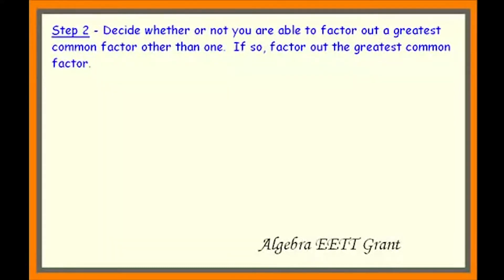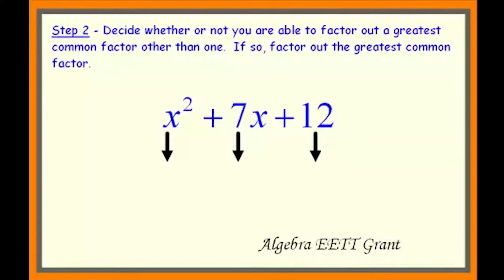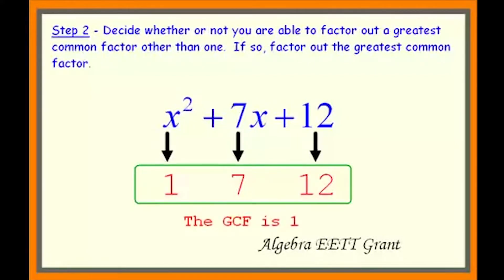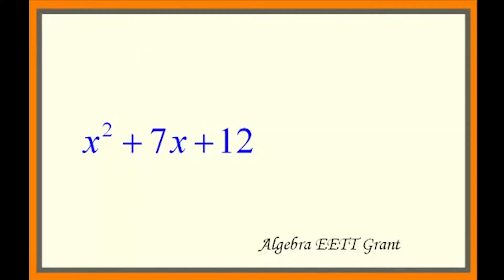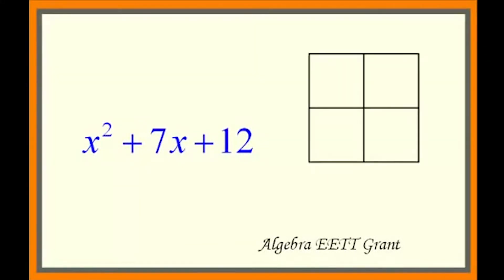Step 2 is to decide whether or not you're able to factor out a greatest common factor. Some trinomials have something in common in all three terms — if that happens, you've got to factor it out first before using the Punnett square. The coefficient of x squared is 1, 7x has a coefficient of 7, and 12 is our constant. The greatest common factor of 1, 7, and 12 is 1, so there's nothing to factor out. Now we're ready to use the Punnett square.